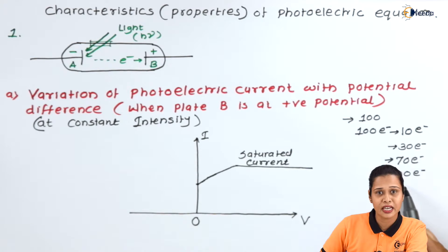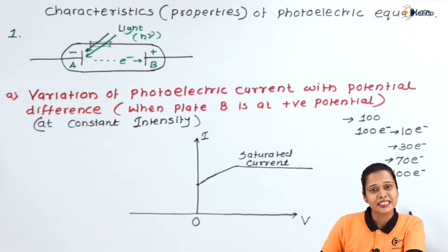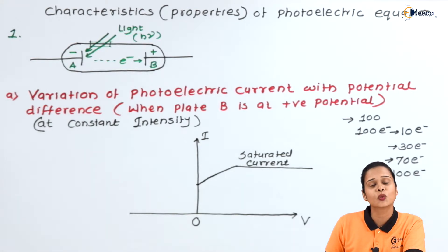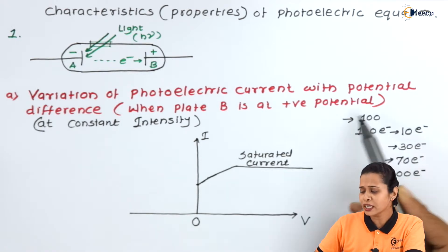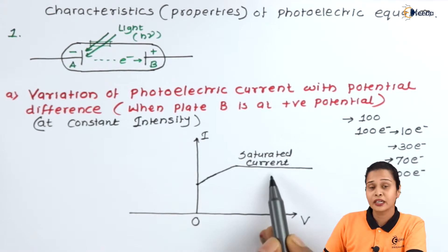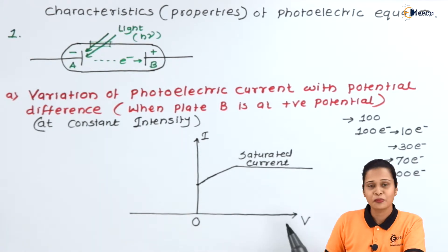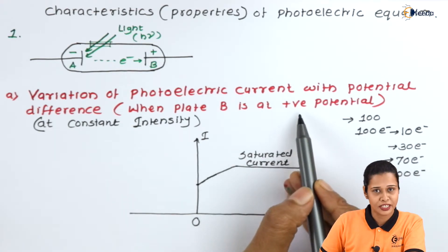This is just an example to understand the concept. Practically, we get current due to very few electrons. Actually, only about 1% of electrons give a photoelectric current; the remaining energy is dissipated as heat. So we have saturated current when metal plate B is at positive potential.